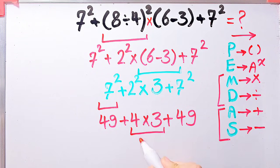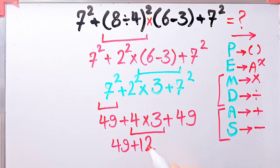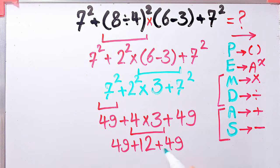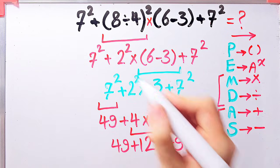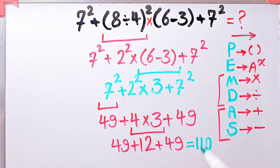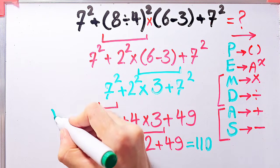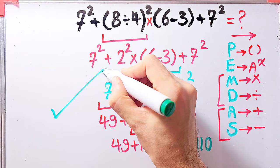Now the question is 49 plus 12, then plus 49. 49 plus 12 plus 49 equals 110. The final answer of this question equals 110. Thanks for watching! Please subscribe to the channel and leave a comment. Goodbye!